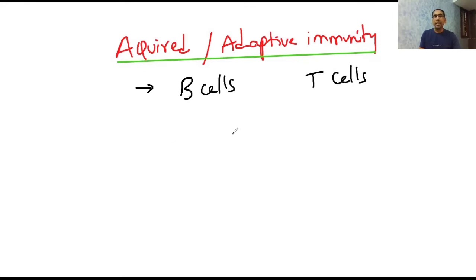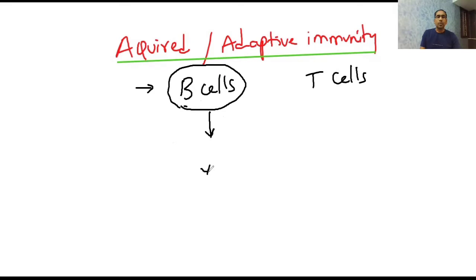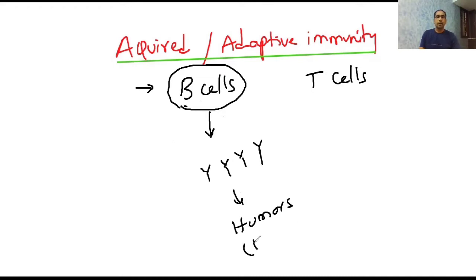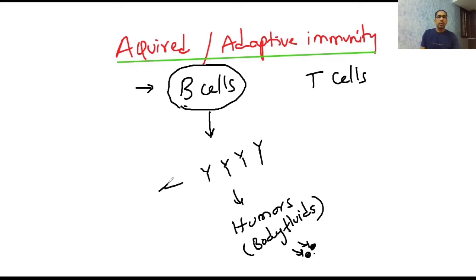In the last class we already discussed about B and T cells, their formation, maturation, and activation. B cells form groups of antibodies and release them into the humors — humors are nothing but body fluids. These antibodies can fight with antigens. The immunity mediated by antibodies found in humors is called humoral immunity.